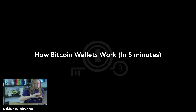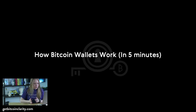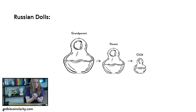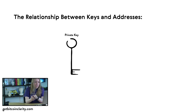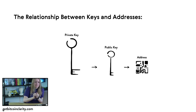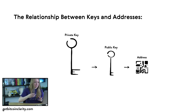The way I think about everything is visually, so how do I apply that to thinking about wallets? You can think about the relationship between keys and addresses with Russian dolls. You have a grandparent, a parent, and a child. If you have a large Russian doll, the smaller one that sits inside is just that — smaller. A similar thing is true for the private key, public key, and address relationship. The public key is sort of a smaller version of the private key, and the address is a smaller version of the public key. You cannot regenerate a public key from the address.